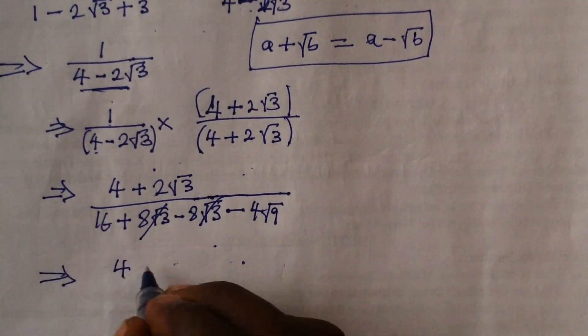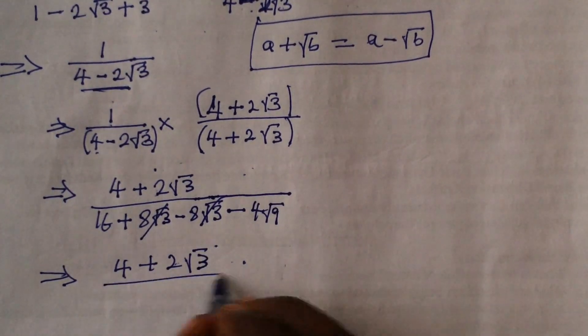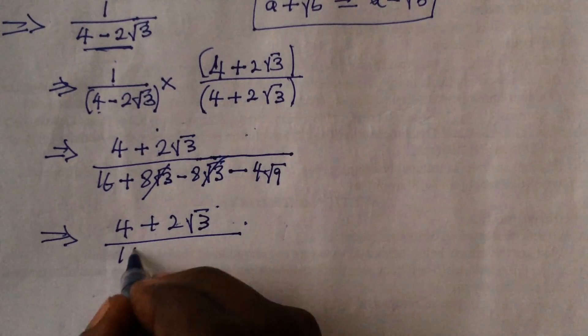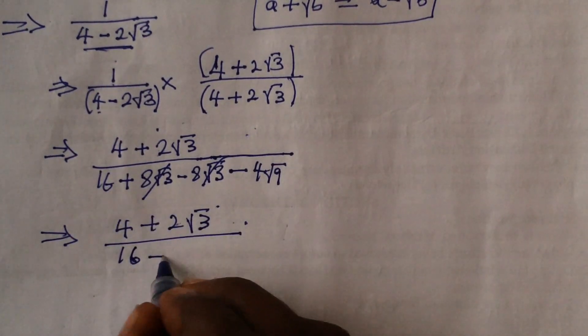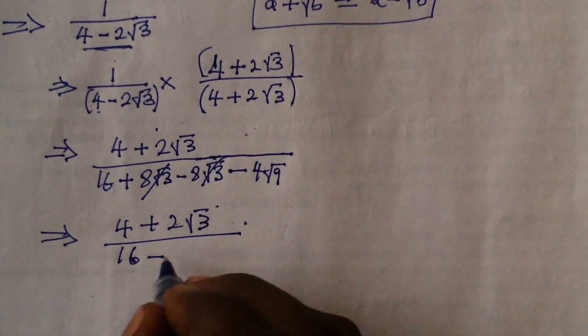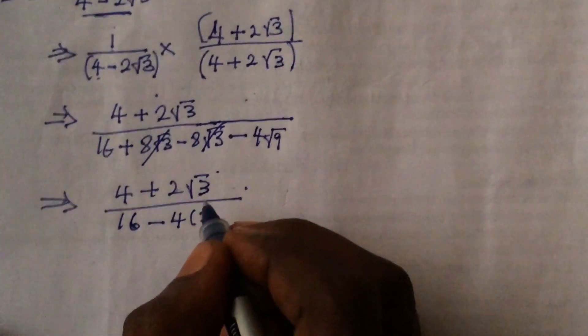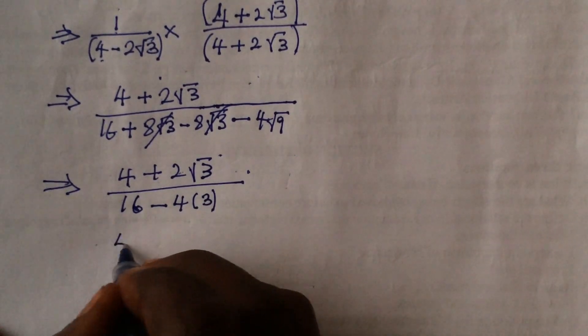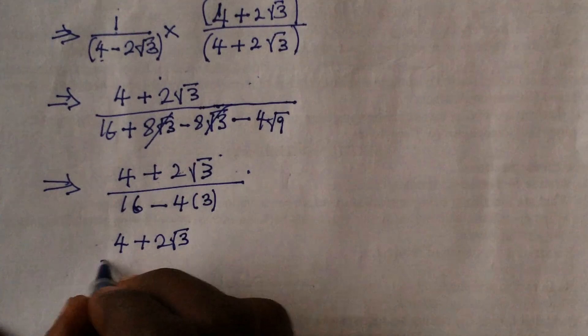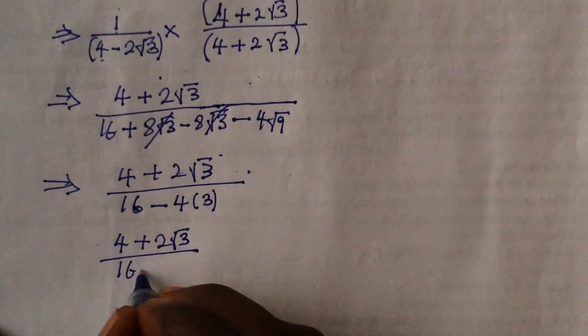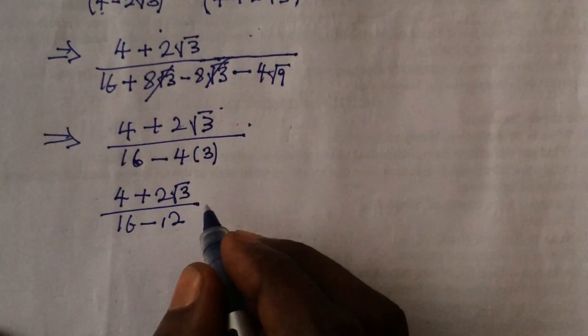These cancel, so we have 4 plus 2 root 3 over 16 minus 12. Root 9 is 3, so 4 times 3 is 12. 16 minus 12 is 4.